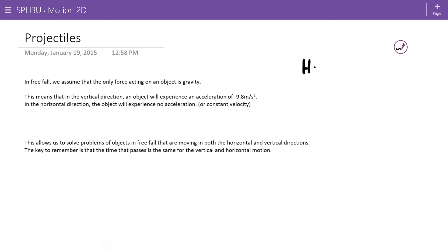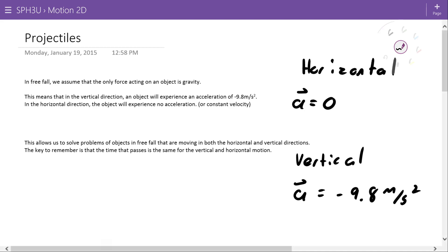So horizontal, we're assuming an acceleration of zero because of the no forces, and vertically we're assuming acceleration of negative 9.8 meters per second squared. Of course the negative here is referring to the idea that the object is accelerating down.